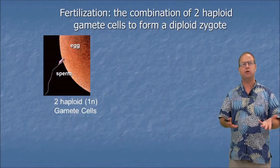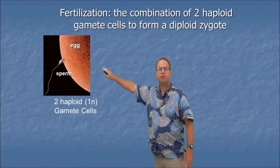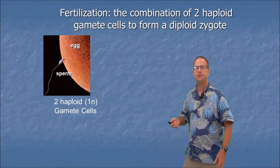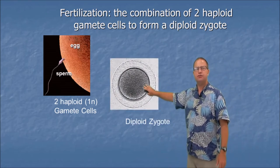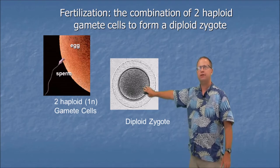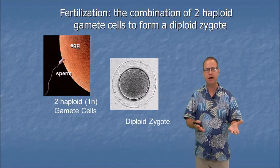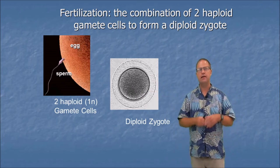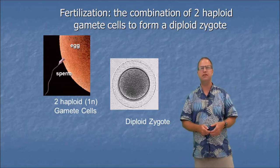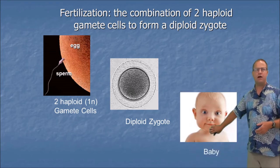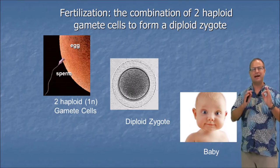Once we have gamete formation, fertilization can take place. Fertilization is the fusion of a haploid egg with a haploid sperm, and the result is a zygote. A zygote is diploid — it has two copies of every chromosome. If a sperm had 23 chromosomes and an egg had 23, the zygote would have 46: 23 from mom and 23 from dad. Eventually this zygote will start dividing mitotically to produce the offspring, giving us cells that are genetically identical to one another.